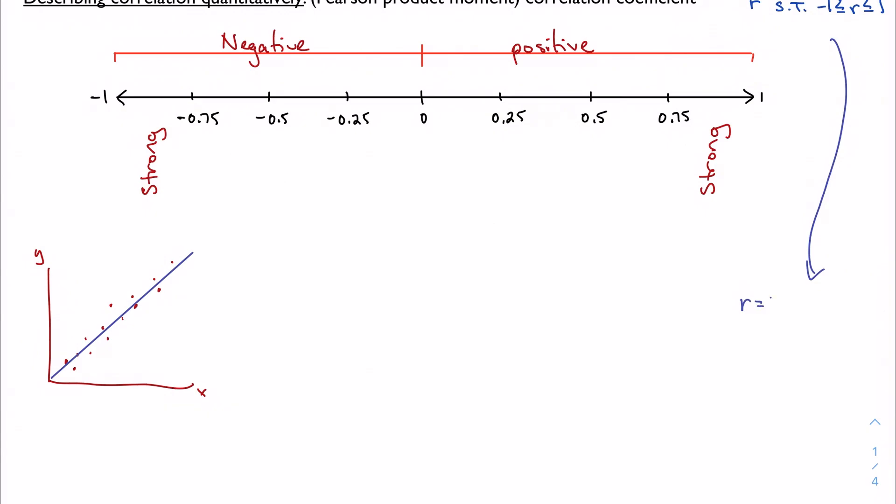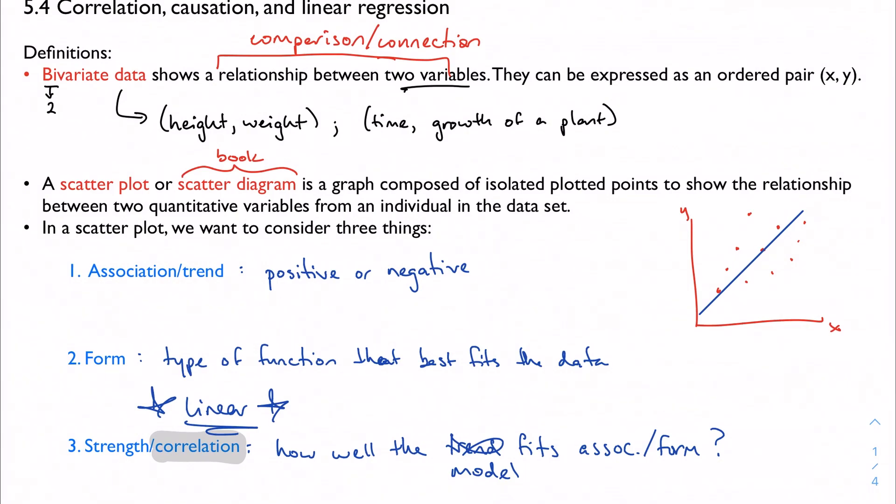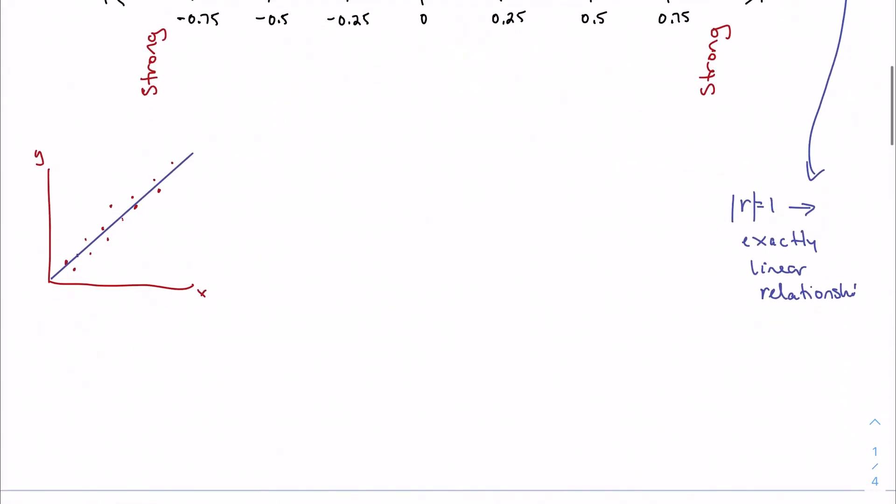I should mention that if R is equal to 1, so the absolute value of R is equal to 1 because it could be negative 1, this is exactly a linear relationship. If the points were to fall exactly on a line, we would say the correlation coefficient value is 1. This is my example of strong—in this case strong positive. I can have strong negative as well.